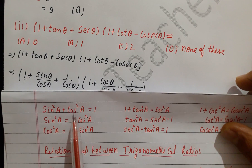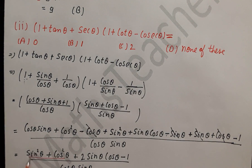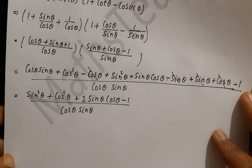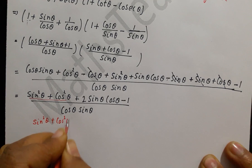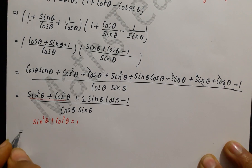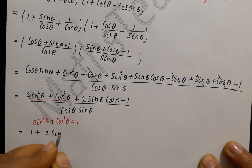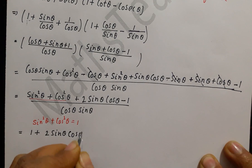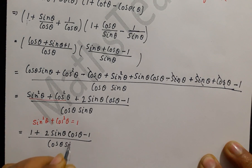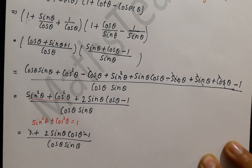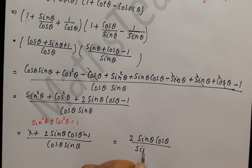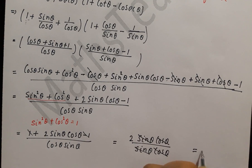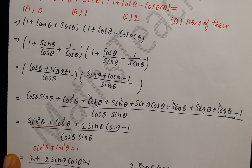Applying the identity sin²θ + cos²θ = 1, we substitute 1 in the numerator: 1 + 2 sin θ cos θ − 1, divided by cos θ sin θ. The +1 and −1 cancel, leaving 2 sin θ cos θ divided by sin θ cos θ. Sin θ cos θ cancels, leaving just 2.